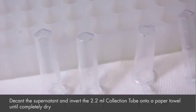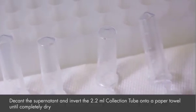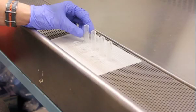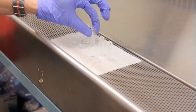Decant the supernatant and invert the 2.2 ml collection tube onto a paper towel for 10 minutes to air dry the pellet. You can help the drying process using the airflow system of the hood.